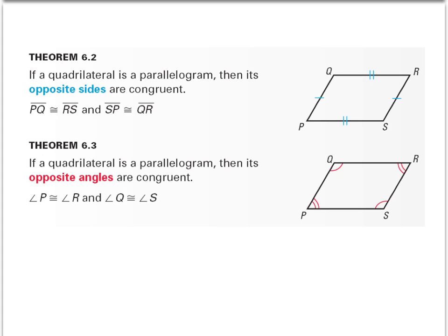A few theorems we want to know about parallelograms. The first one has to do with the sides. So if we have a quadrilateral and it is a parallelogram, then we know its opposite sides are congruent. So here we have QR is congruent to PS and QP is congruent to RS.